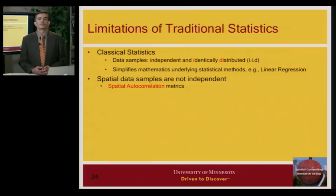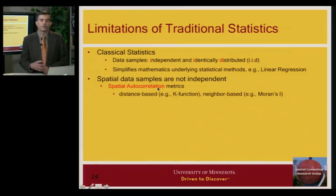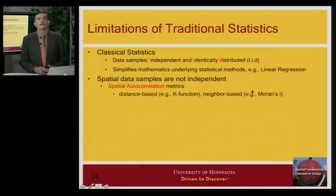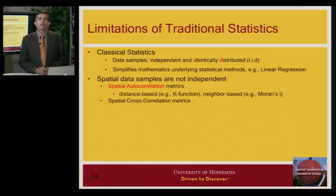If you are not sure whether your data has independence or not, you can compute some of these metrics and they will quantitatively tell you whether that is the case. We will talk about one such function called the K function — given a set of points, it can tell you whether these points are independent of each other, spatially random, or actually interact with each other. There are other such measures as well.